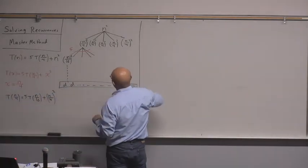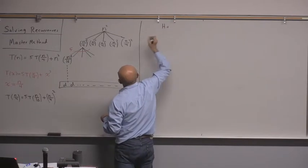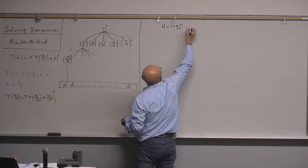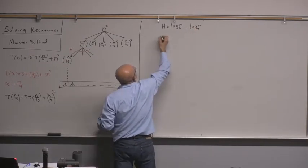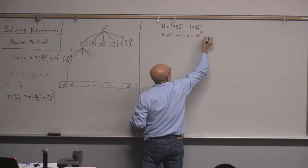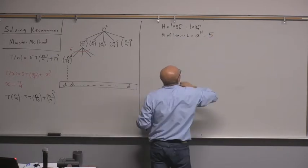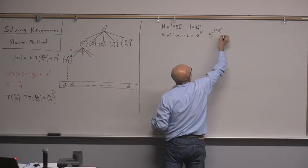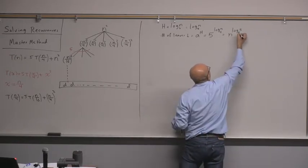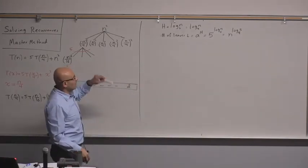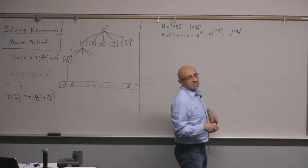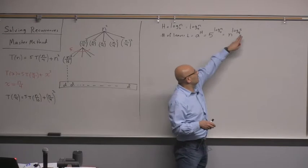The height h = log n base 4. The number of leaves l = a^h, where a is 5, so it's 5^(log n base 4), which equals n^(log 5 base 4). Log 5 base 4 is something slightly greater than 1 but less than 2, and we can leave it as is — we may not need to know exactly what it is.